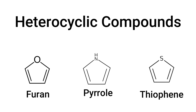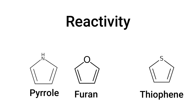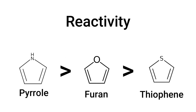Heterocyclic compounds are organic compounds with a ring structure that contains in the cycle at least one carbon atom and at least one other element, such as sulfur, oxygen, or nitrogen. The most reactive of the three is pyrrole, quickly followed by furan and then lastly thiophene. But today we will focus just on thiophene.